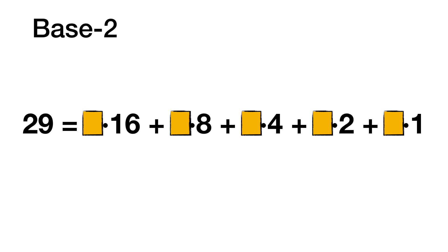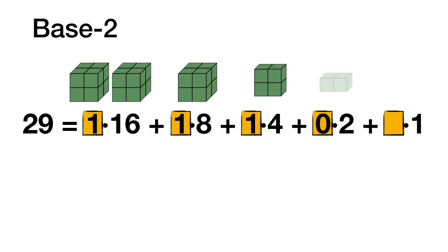For example, we could write the number 29 by breaking it apart into a sum of multiples of 16, 8, 4, 2, and 1. There's 1 sixteen, 1 eight, 1 four, 0 twos, and 1 one. To represent 29 in base 2, we take those numbers in the yellow boxes as our binary digits. In binary, we would write 29 as 11101, and we add a little subscript of a 2 there to remind us that that's a number that should be read in base 2.